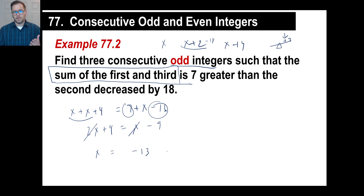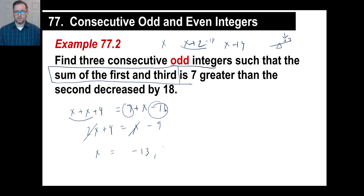Is it an integer? Yes. Is it odd? Yes — passes the two smell tests. So x equals negative 13. The next odd integer going right is negative 11, and the last one is negative 9. Your three consecutive odd integers are negative 13, negative 11, negative 9.